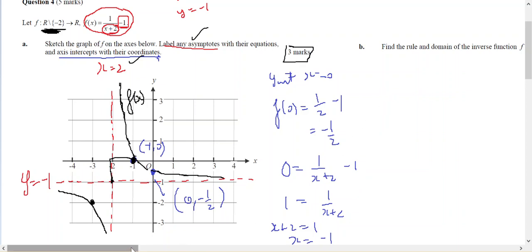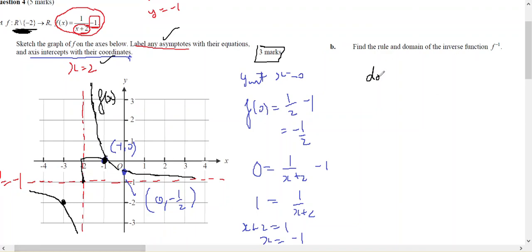The rule and domain of the inverse. The domain of the inverse equals the range of f, which I can tell by looking at this, will be all real numbers except for negative 1. Because there is a horizontal asymptote at negative 1, all the y values are everything except negative 1. So there is my domain.